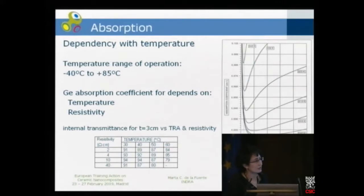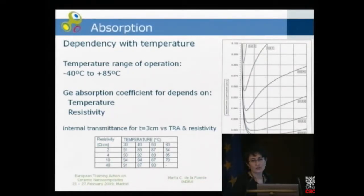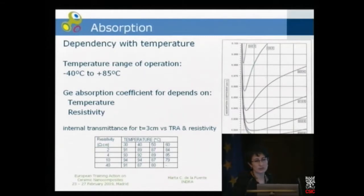Before discussing reflectivity, let's talk about a couple of factors relevant to absorption. First, there is an important dependency with temperature. The absorption coefficient of all materials depends on temperature, and it increases with temperature. In military applications, airborne systems, or satellite systems, the temperature range of operation is very wide — from minus 40 degrees up to 85 degrees for the environment, and potentially up to 100 degrees or higher inside the system due to electronics and sun energy.